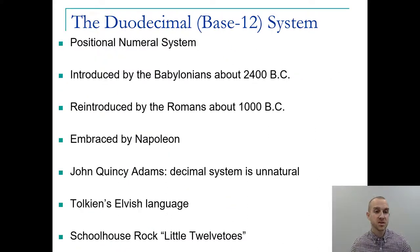Within the number systems, while many systems have gone to base 10, base 12 has been another system that has shown up throughout time and has some natural reasons. It is a positional numeral system that showed up with the Babylonians in 2400 BC, came back with the Romans around 1000 BC, was even embraced by Napoleon over the base 10 system, and John Quincy Adams, our president in 1821, said we shouldn't be using the decimal system because it's unnatural. There's no base 10 system in nature, so why are we using it?